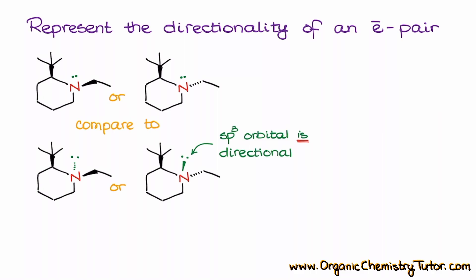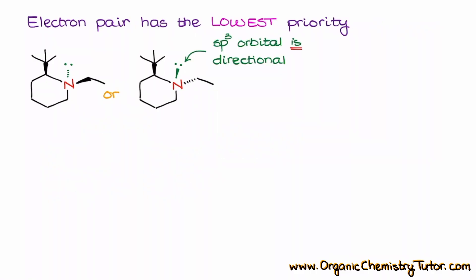Next thing is that whenever we are assigning the priority, the electron pair is always going to have the lowest possible priority. It means that it actually has the lower priority than even a hydrogen atom. As it has the lowest possible priority, it is going to have a number 4 priority in a molecule.